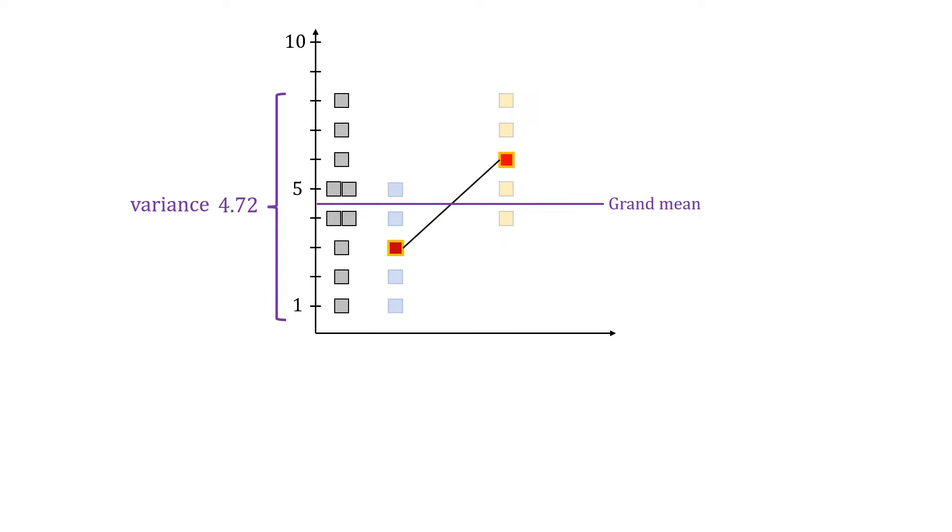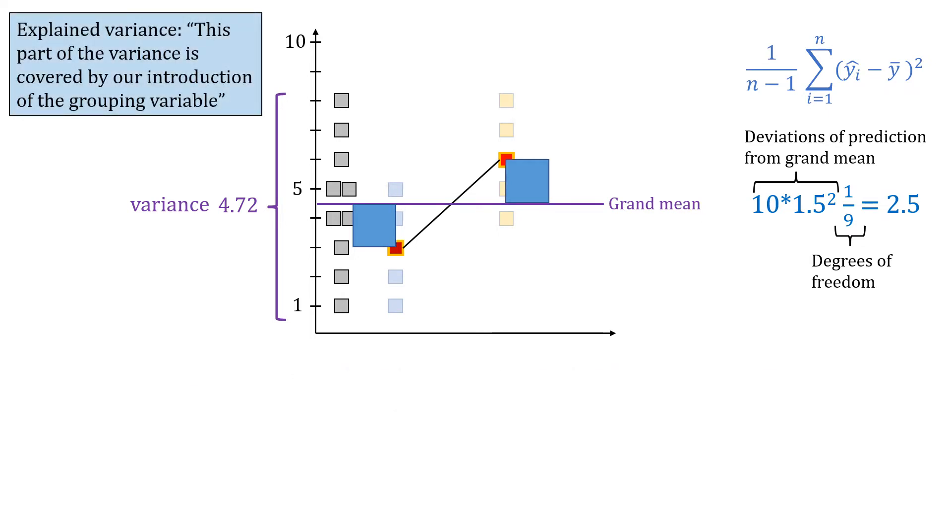Now you calculate again a type of variance, but this time you don't use the data points but you replace them by the predicted value for each group, 3 and 6 respectively. The squared deviations are the same for all because the differences with the grand mean are negative 1.5 and 1.5. You add the squared deviations, which in this case just means to multiply it by 10 because they're all the same, and then you divide it by the degrees of freedom, n minus 1. This is your explained variance. This would be enough to calculate r squared, but let's first find the unexplained variance the same way, even though we could see here that it will be 2.22.